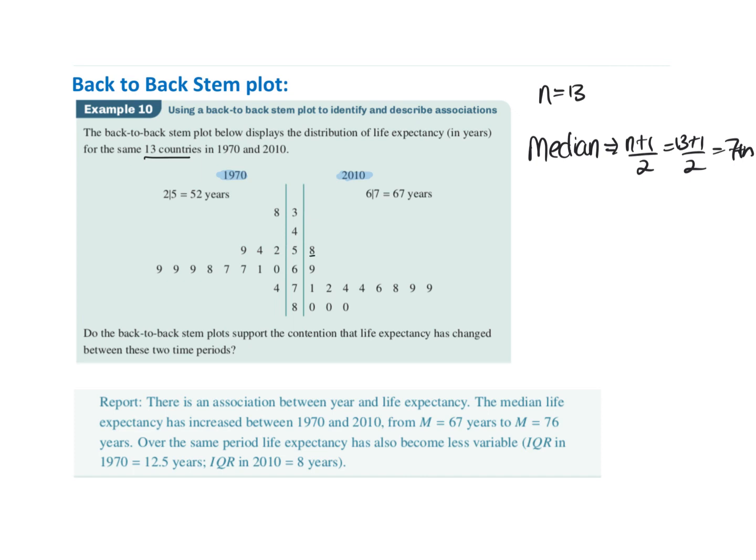So 13 plus 1 divided by 2, so it equals the seventh. If I count in 7, so it'd be 1, 2, 3, 4, 5, 6, 7. So we can see 76 is the median on this one. If I count through 7, 1, 2, 3, 4, 5, 6, 7, I can see 67 is the median on this side.